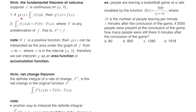Number one: if g of x equals the integral from a to x of f of t dt, then the derivative gives us g prime of x is equal to f of x. So the derivative of the integral is equal to the original function. Number two: the integral from a to b of f of x dx is equal to capital F of b minus capital F of a, where capital F is any antiderivative of lowercase f.